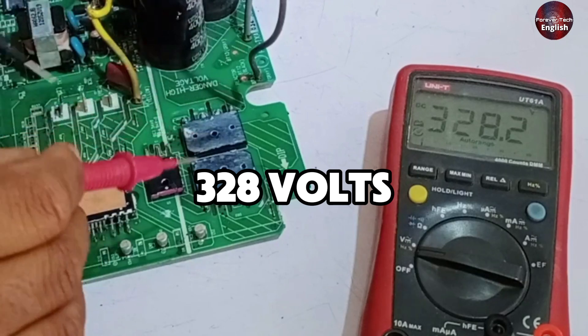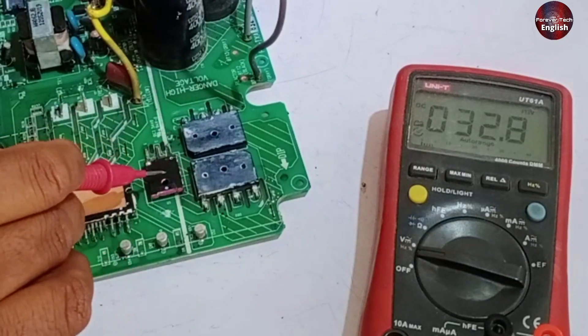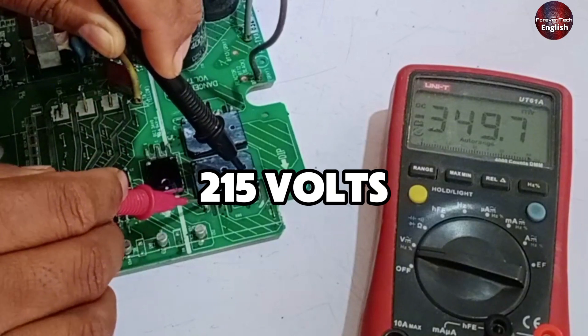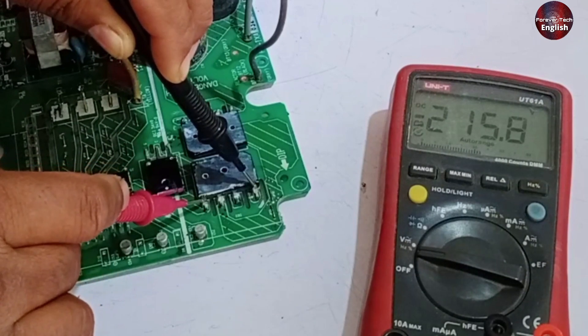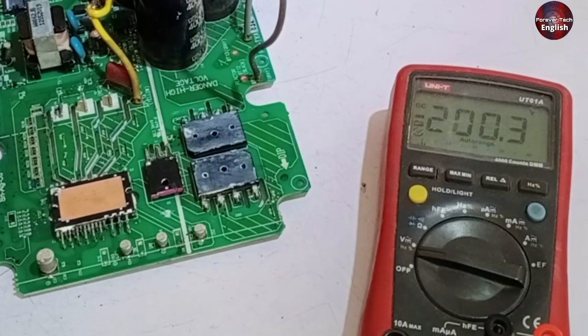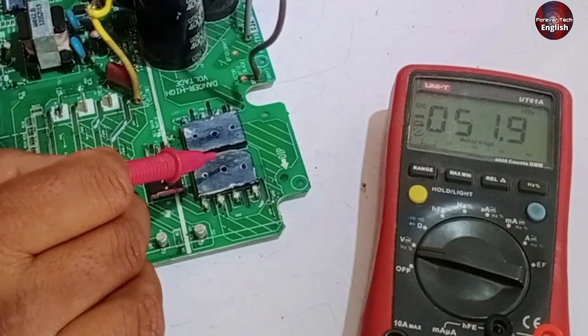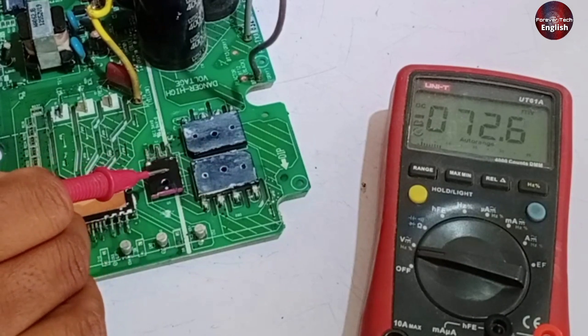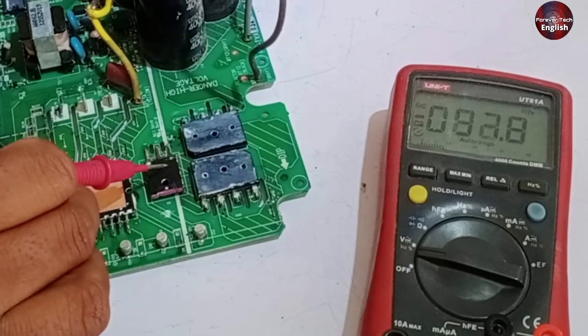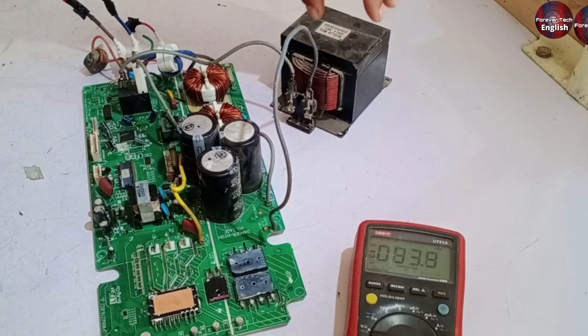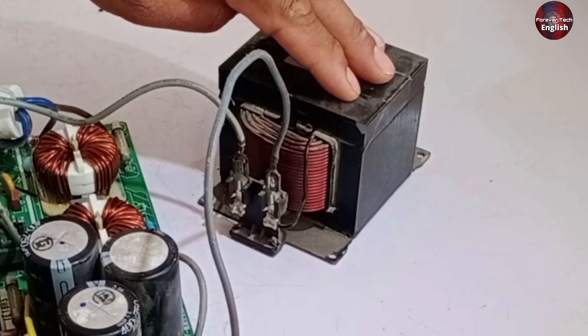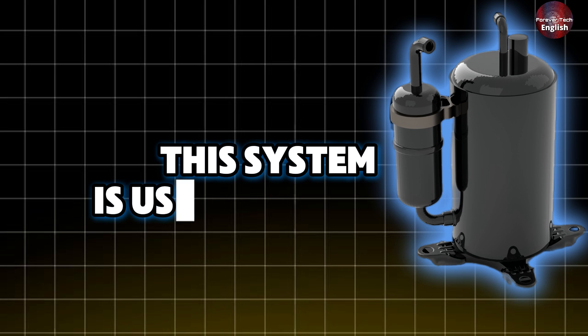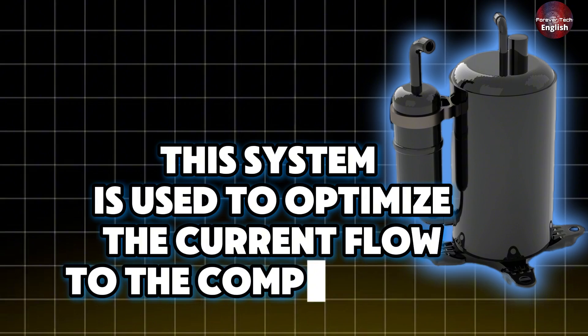Here, you can see 328 volts, and this point is connected to the IGBT. In the second bridge rectifier, we observe 215 volts DC, indicating no significant voltage boost, likely due to minimal filtering or boosting. Now, what happens is that current is flowing with the voltage, and the IGBT will control the current by turning it on and off, improving the power factor. There's also a reactor here, which sometimes stores energy and sometimes discharges it, further improving the power factor. This system is used to optimize the current flow to the compressor.